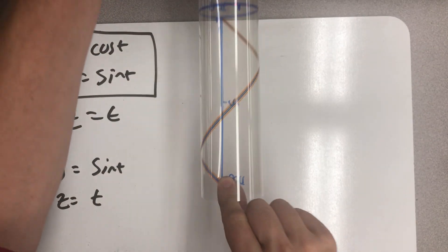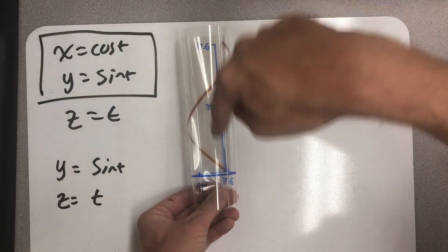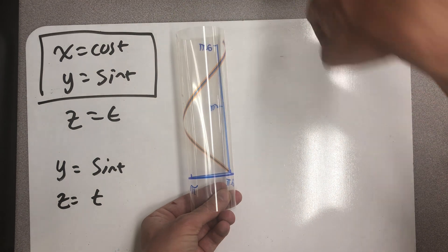And if I hold this just right, we see that. And that was upside down to the camera. I see that sine wave going up the z axis.